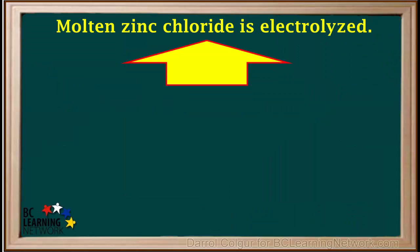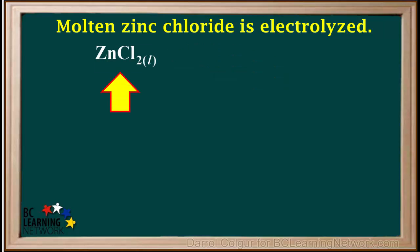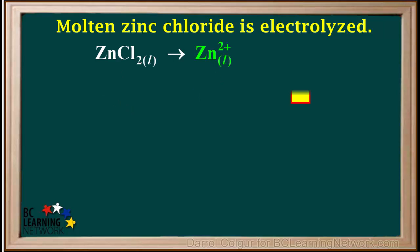Now that we've seen how this cell works, we'll show you a process you can use for any questions involving the electrolysis of a molten salt. We'll use our example here of molten zinc chloride. Molten salts always consist of mobile positive and negative ions, so we write the dissociation equation for the salt forming liquid ions. We have ZnCl2 liquid forming Zn2+ liquid and 2Cl- liquid.